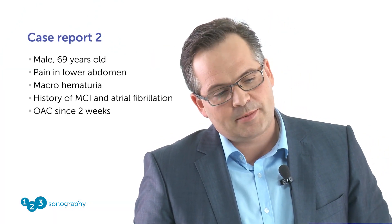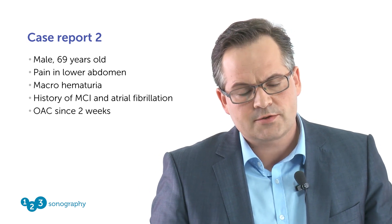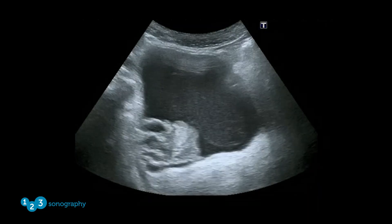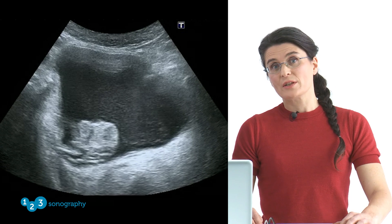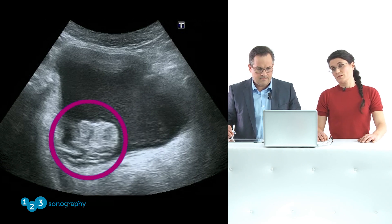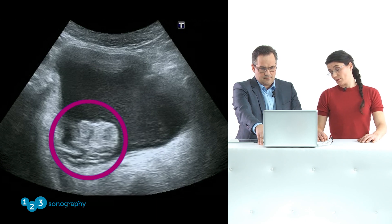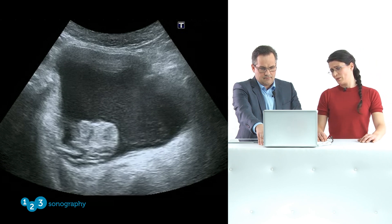We have another case of a patient with pain in the lower abdomen. I was on night shift again. A male patient came to our hospital and complained about pain in the lower abdomen. He had a medical history of a myocardial infarction one year ago, and two weeks ago he was diagnosed with atrial fibrillation and received oral anticoagulation. We did a scan. We can again see a urinary bladder — this fluid-containing, quite dark object. But we can see an object that should not be here. It's white, meaning it's hyperechoic. It's round and it's on the left side of the picture, somehow connected with the bladder wall.